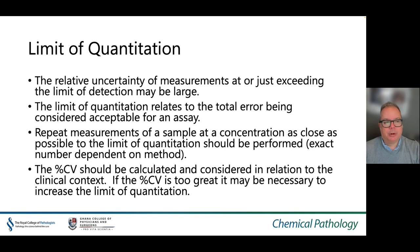The limit of quantitation relates to the total error being acceptable for the assay. The relative uncertainty of measurements at or just exceeding the limit of detection may be large. To obtain this, repeat measurements of a sample at a concentration as close as possible to the limit of quantitation should be performed — a minimum of 10 replicates should be considered. The percent CV should be calculated and considered in relation to the clinical context, i.e. the target specification set at the beginning of the exercise. If the percent CV is too great, it may be necessary to increase the limit of quantitation until the CV meets the required target.